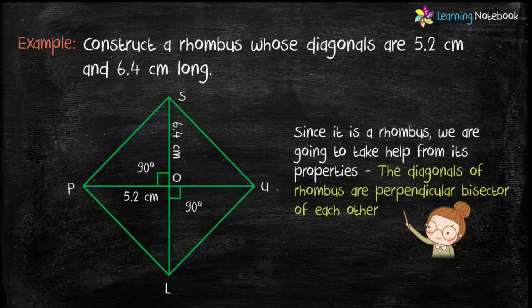Which is, the diagonals of rhombus are perpendicular bisector of each other. So, we will use this property to construct this rhombus.